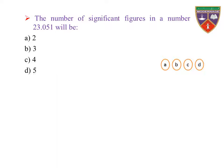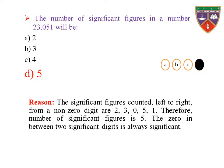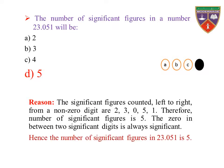The number of significant figures in 23.051 — option A: 2, B: 3, C: 4, D: 5. The key is 5, therefore the correct option is D. Reason: the significant figures counted left to right from a non-zero digit in 23.051 are 2, 3, 0, 5, 1. Therefore, the number of significant figures is 5. The 0 in between 2 significant digits is always significant. Hence, the number of significant figures in 23.051 is 5.